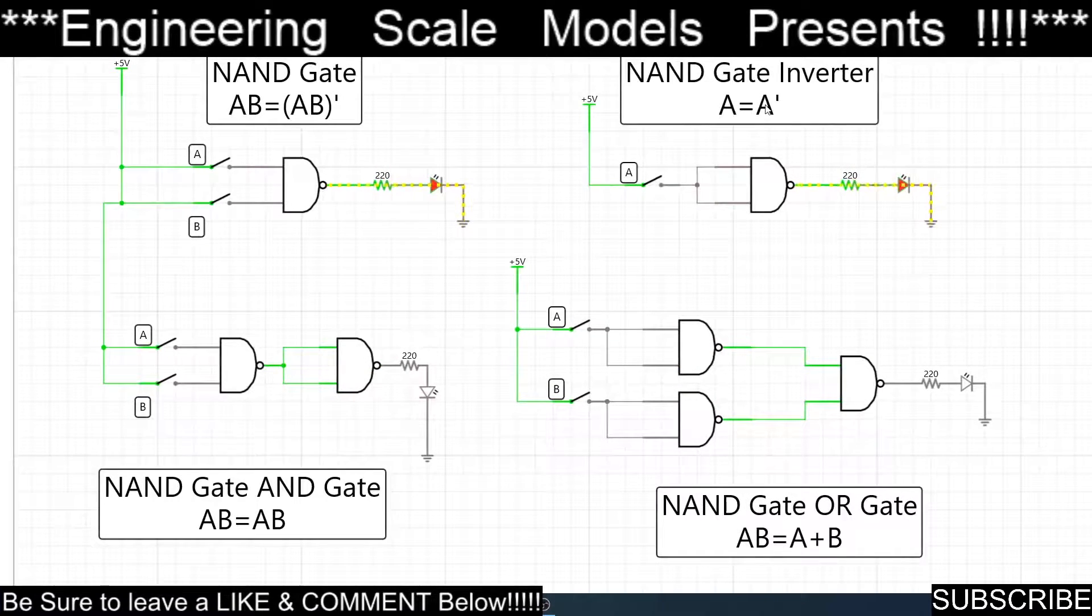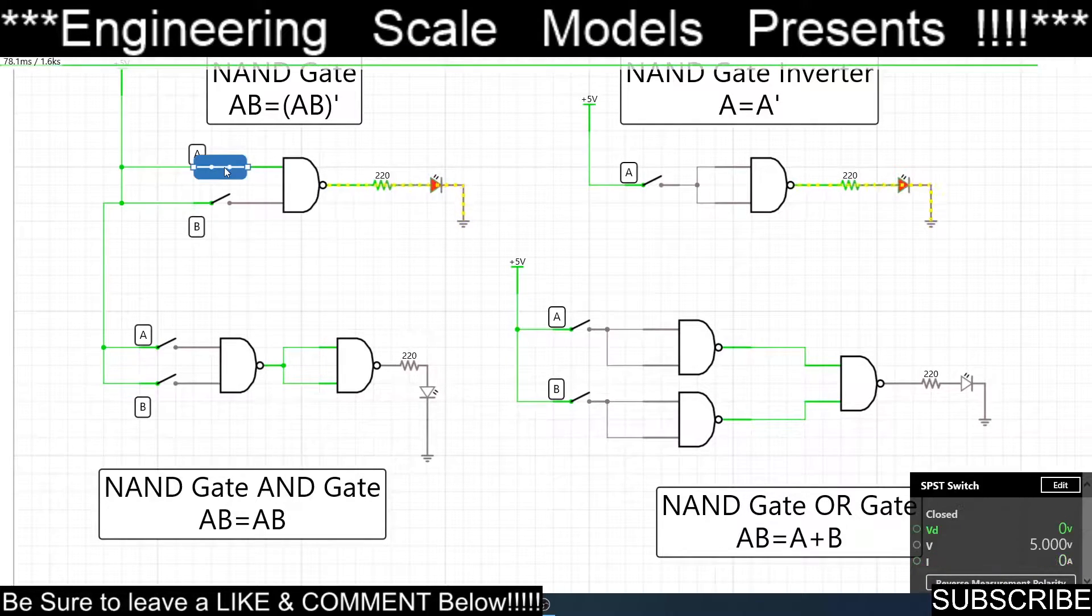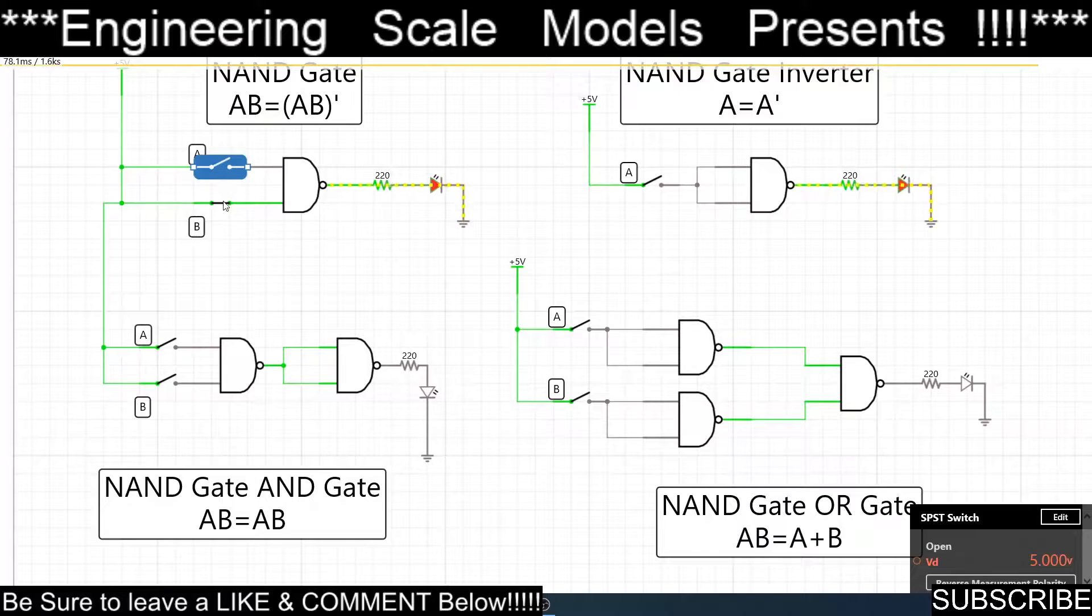Here's the NAND gate. Here is your standard NAND gate here. You have your A and B as the inputs, so if they're both zero, you have the output as a high, so the LED's on. If I click one, it's still on. If I click both of them, it's off. Turn off A, it's back on.